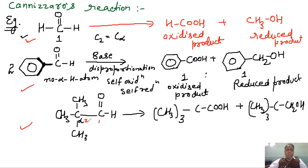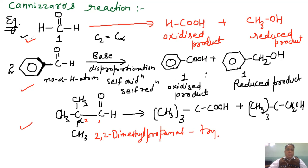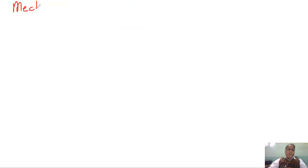The IUPAC name of that trisubstituted molecule would be 2,2-dimethylpropanal. You can try the mechanism with this molecule; if you want me to demonstrate it, write in the comment box and I will do it as well. Let us now look at the mechanism of the Cannizzaro reaction.